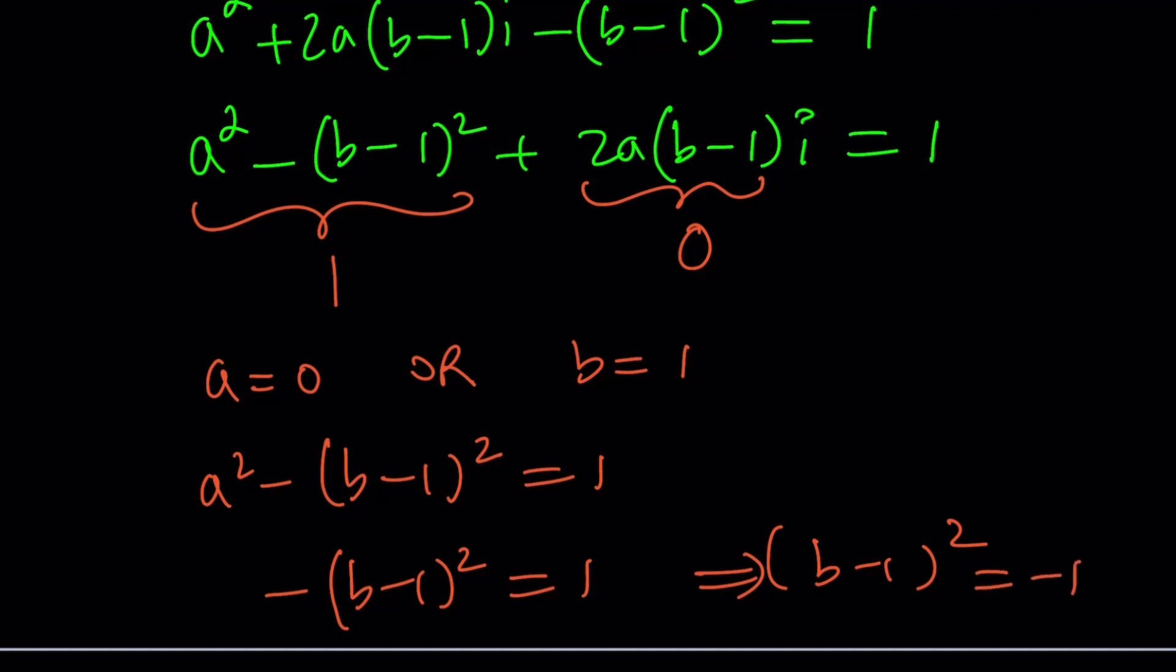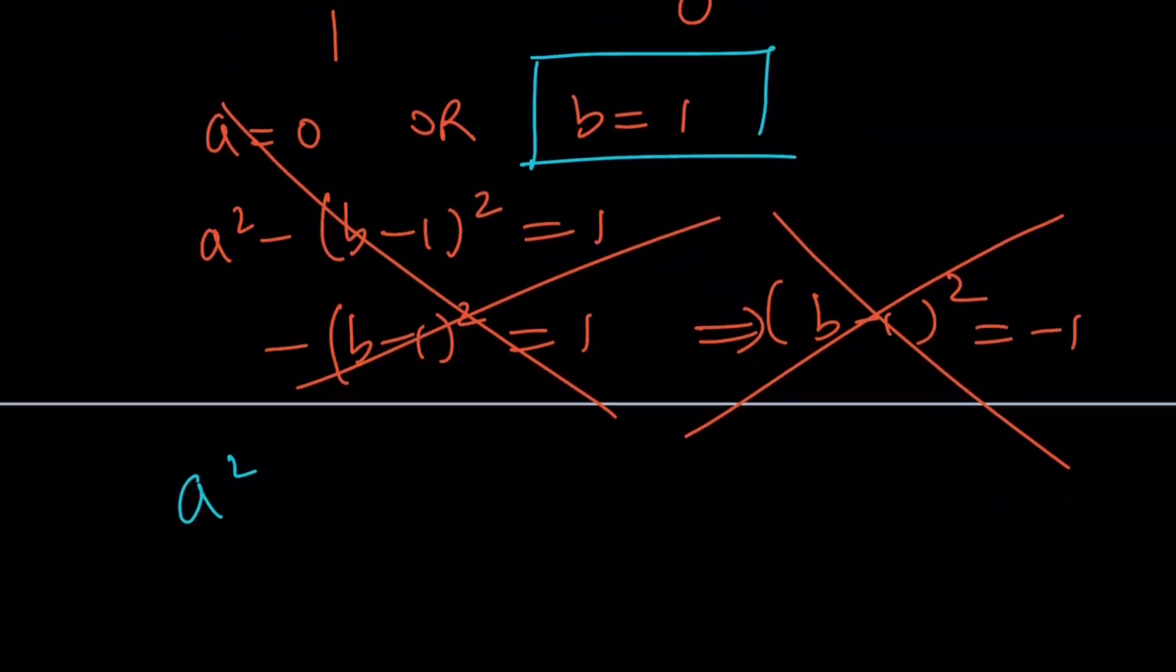Therefore, this choice is not going to work. Make sense? So we have to go with b = 1. That's the only option. So if b equals one, then we get a² - (b-1)² = 1. And if b equals one, this is going to be zero. And from here, we're going to get a² = 1.